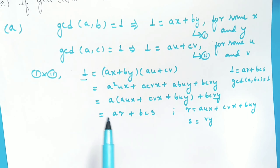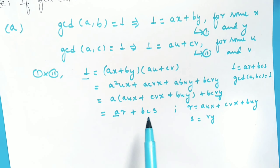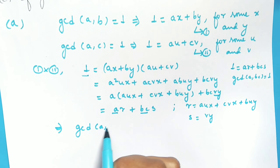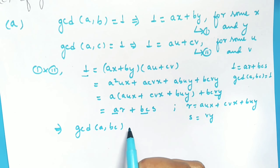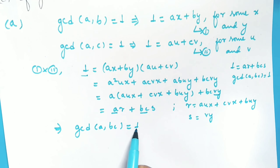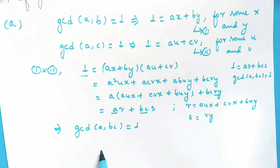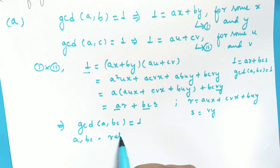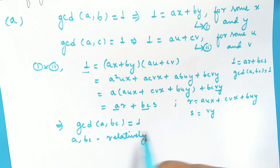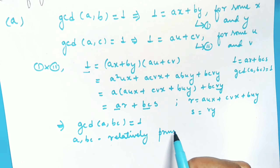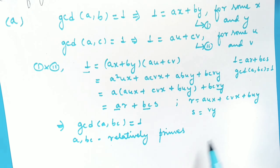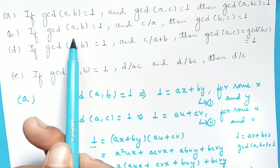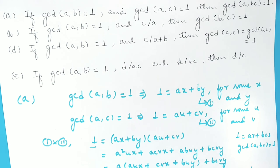We have written 1 as a linear combination of A and BC. So it implies that GCD of A and BC is 1, and therefore A and BC are relatively prime. Now let's do the second property: if GCD of A and B is 1 and C divides A, then GCD of B and C is 1.